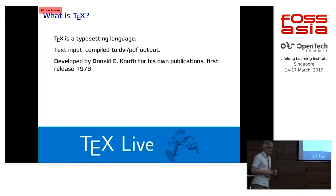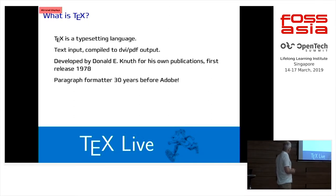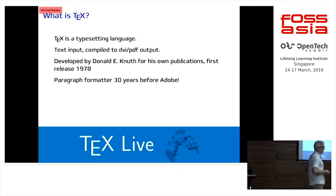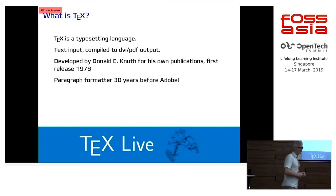TeX was developed by Knuth starting around 1978, first release. He developed it only for his own typesetting. Just a funny coincidence — most people don't know — TeX had paragraph-level line-breaking, looking at a whole paragraph and breaking lines based on that, when it was released. Adobe introduced it around 2009 or 2010, as big news in InDesign: "Finally, we have the paragraph formatter." By the way, TeX was open source — otherwise you just could have copied the code.